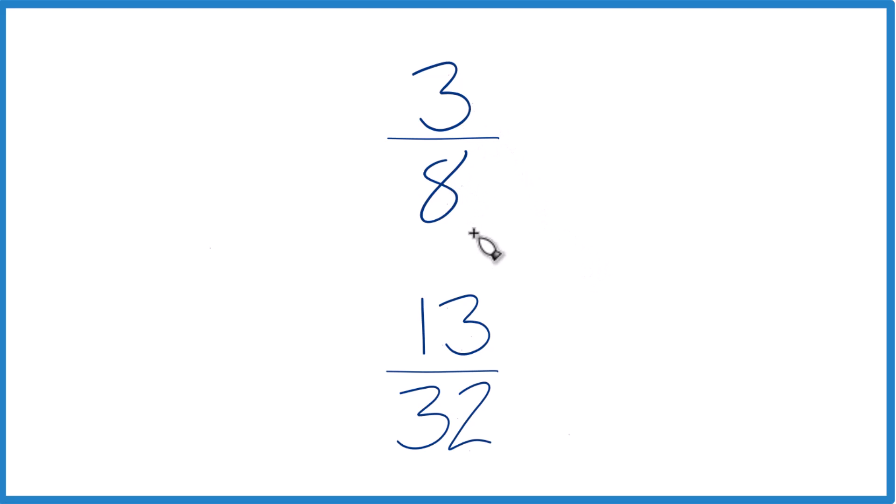You could divide 3 by 8 on a calculator and get a decimal. Divide 13 by 32 on a calculator to get a decimal and just compare them. Figure out whether 3/8 is larger than 13/32.